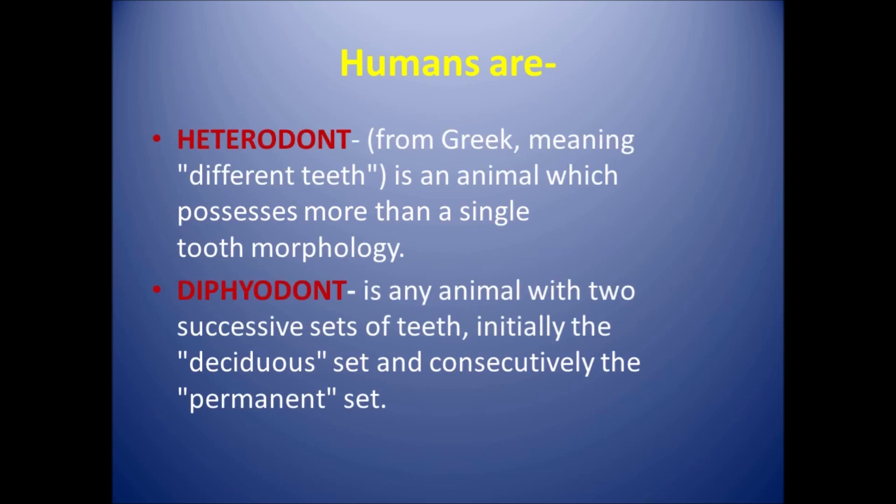Humans are heterodont as well as diphyodont. Heterodonts are those animals which possess more than a single tooth morphology, such as central incisor, lateral incisor, canine, premolar, and molar — all teeth of different morphology. Diphyodonts are those animals which contain two sets of teeth: first is deciduous, and then consequently the permanent set.